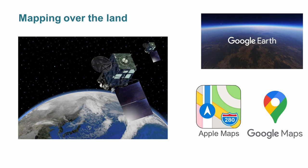When we map over the land, we're trying to find information that tells us where and what is on the land. This is quite familiar to us — we use software platforms like Google Earth, Apple Maps, and Google Maps. The reason we can do this is because we have satellites circling the Earth taking pictures — Earth observations — and this lets us see what's on land.